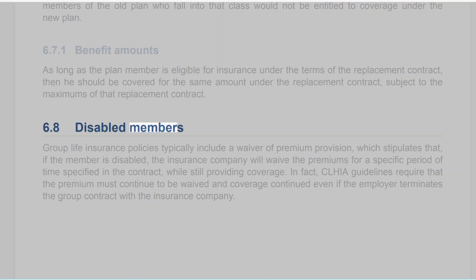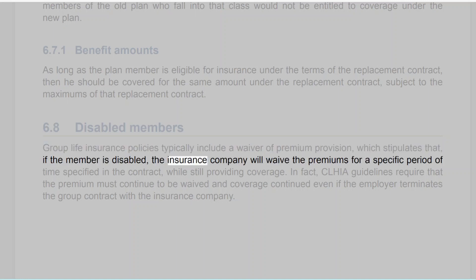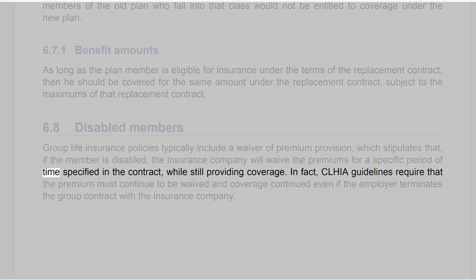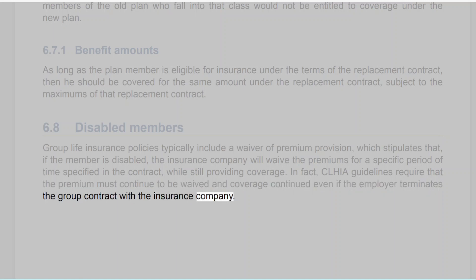6.8 Disabled Members. Group life insurance policies typically include a waiver of premium provision, which stipulates that if the member is disabled, the insurance company will waive the premiums for a specific period of time specified in the contract while still providing coverage. In fact, CLHIA guidelines require that the premium must continue to be waived and coverage continued even if the employer terminates the group contract with the insurance company.